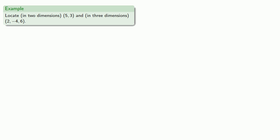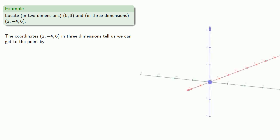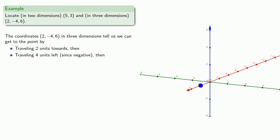Now if I'm in three dimensions, the coordinates (2, -4, 6) tell us we can get to the point by traveling two units towards — that's using our standard orientation in the first octant. Then we'll travel four units to the left, since our y-coordinate is negative. And finally, our z-coordinate is 6, so we'll travel six units upward.